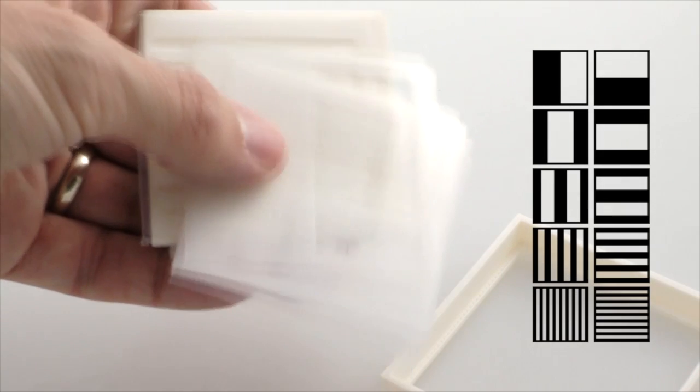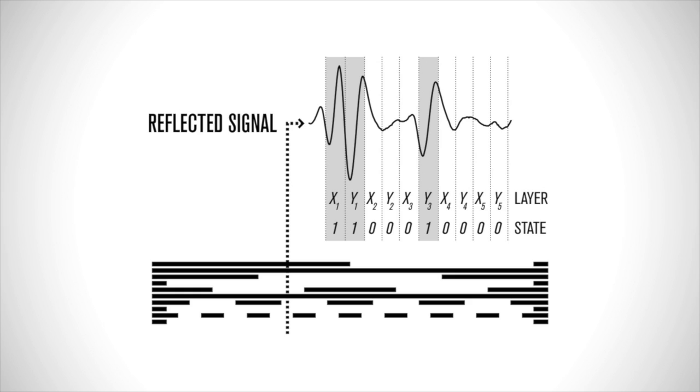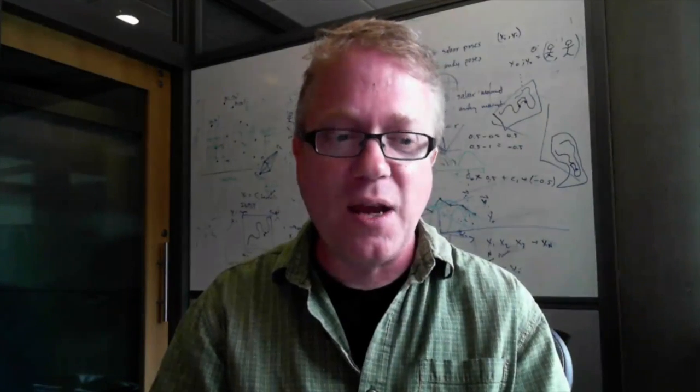Chiefly what you have is the ability to sense changes in the index of refraction of the material. The biggest and easiest way to create a change in the index of refraction is to go from the 3D printed material to air, which gives you a big jump in the index of refraction. That's the part that these interfaces reflect very nicely in the terahertz domain.